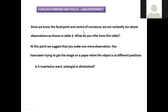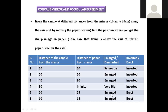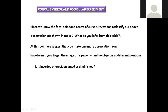The conclusions from this table: since we know the focal point and the center of curvature, we can re-classify our observations. These inferences are mainly drawn based on two factors — the focal point, which is the average distance used to give a proper image, and the center of curvature, denoted as point C. Image position, image size, and whether the image is straight or inverted purely depend on these two parameters.